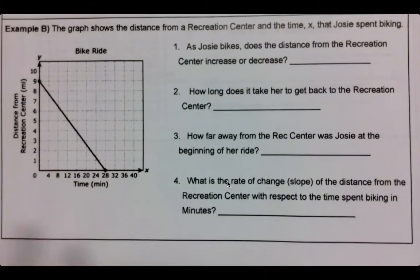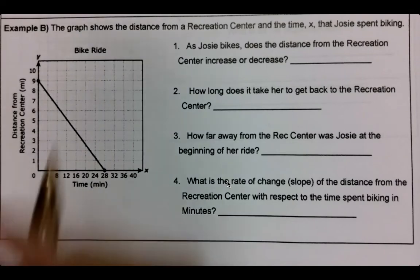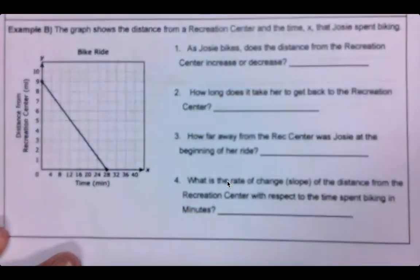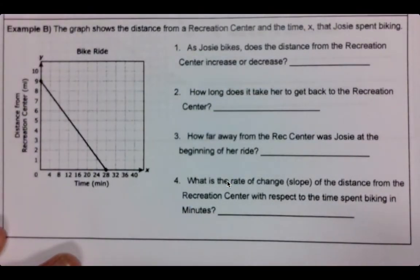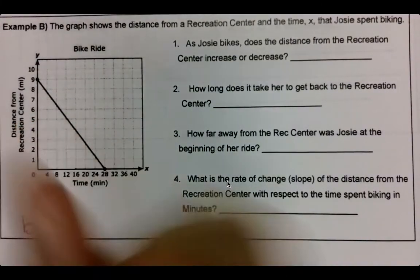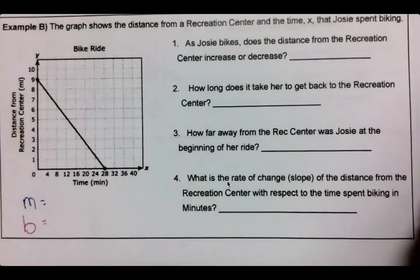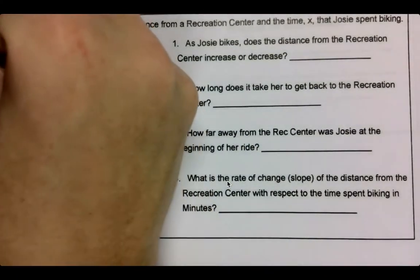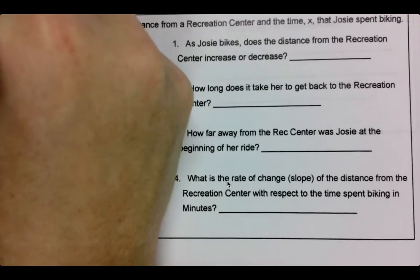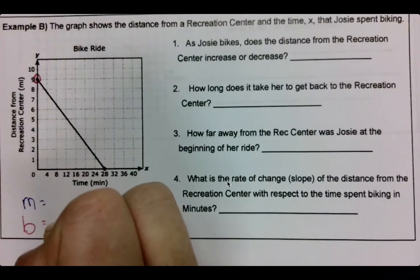All right. So for the second one, we're talking about Josie riding her bike and the distance from the recreation center. Let's figure out what our M and B are. Our B is easier to figure out because it is where our y-axis—remember the y-axis, the up and down one—is our B. So that is at nine.